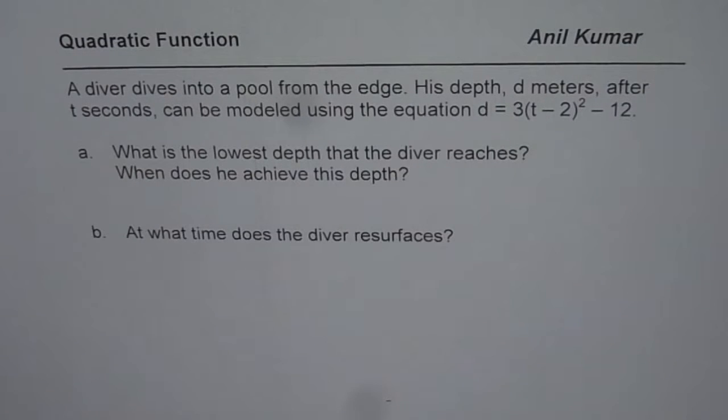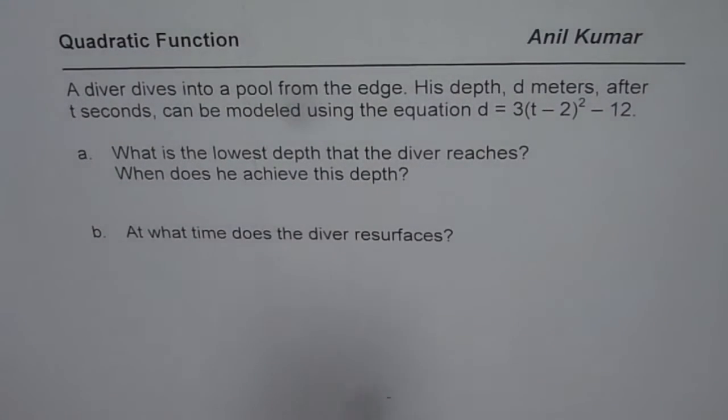The question here is: a diver dives into a pool from the edge. His depth d meters after t seconds can be modeled using the equation d = 3(t - 2)² - 12. What is the lowest depth that the diver reaches? When does he achieve this depth?